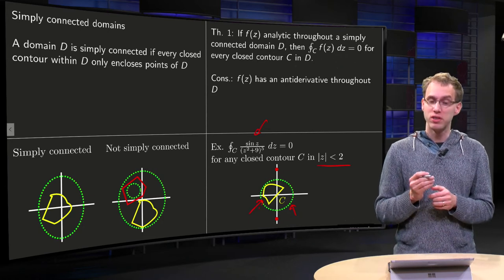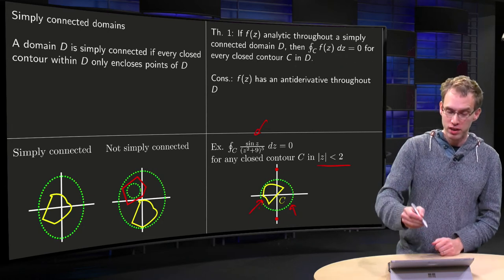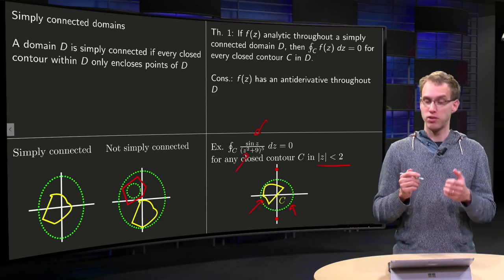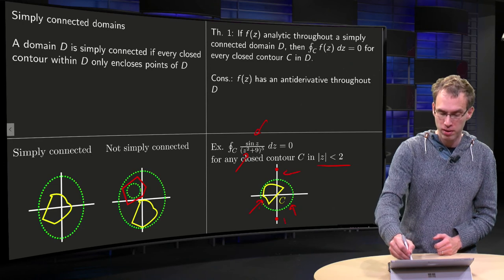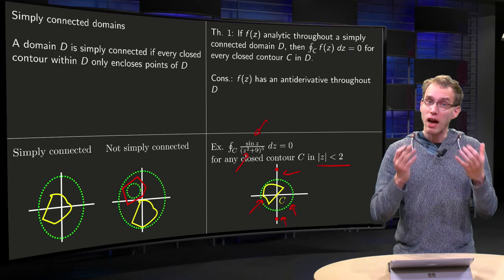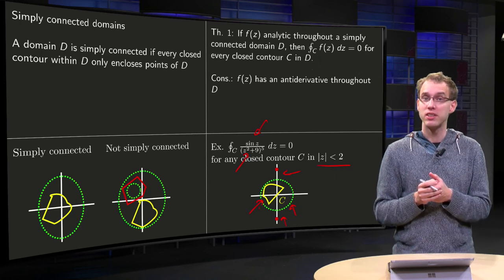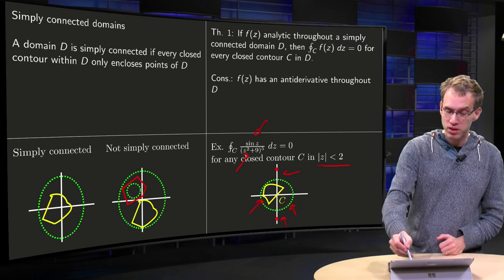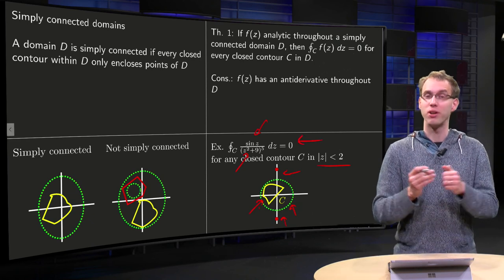However, if we take a look at the function, we see that it has two singularities at z squared plus 9 equals 0, so z equals plus or minus 3i over there and over there. But they are outside our region, so that means that our f of z is analytic on and inside our domain D, which is simply connected, which means that we can conclude automatically that the integral is zero.